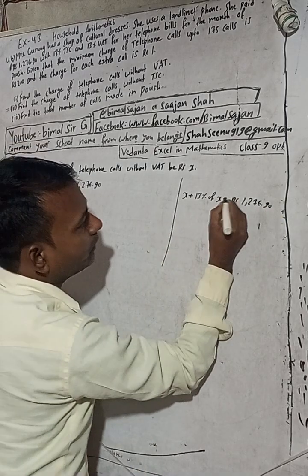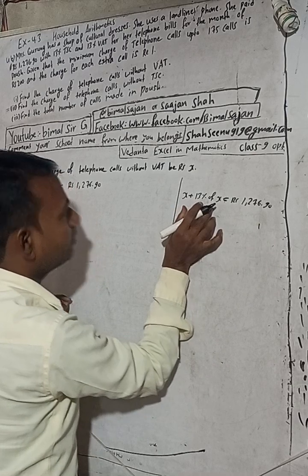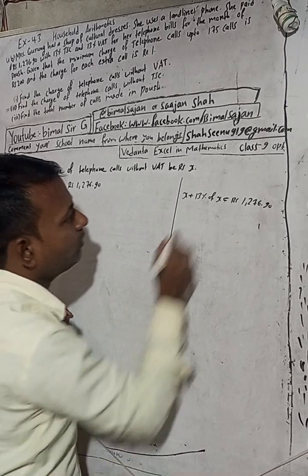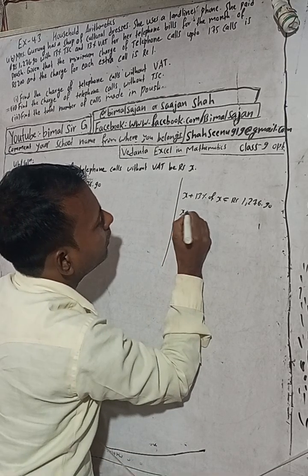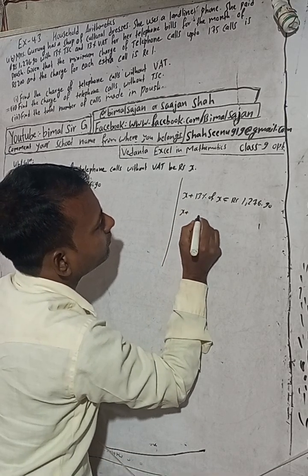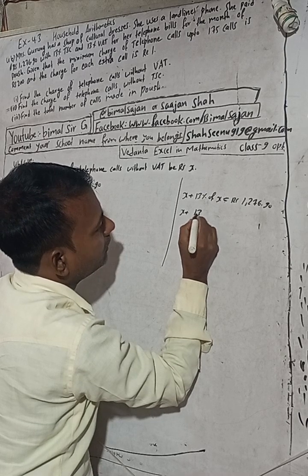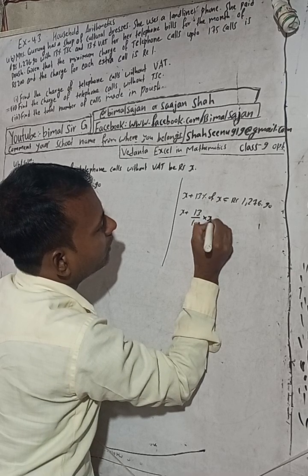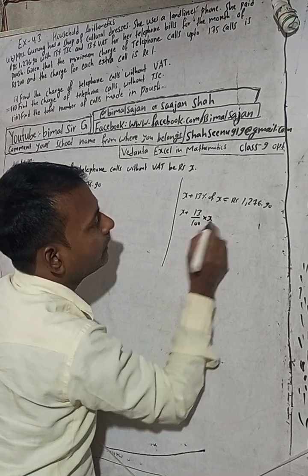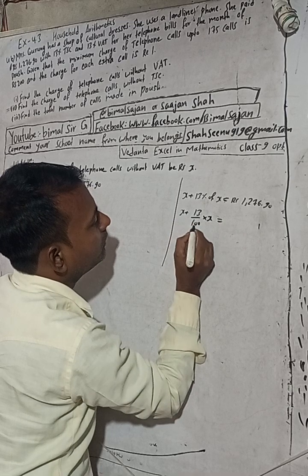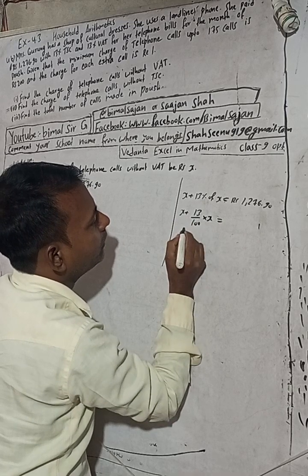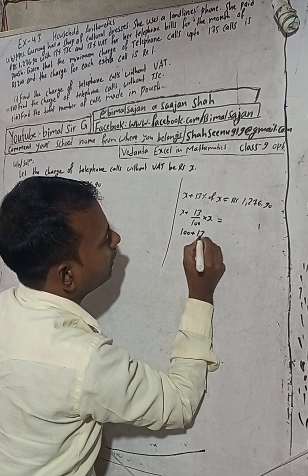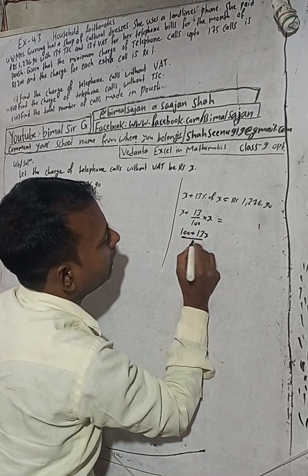When you solve this, x plus 13% means 13% equals 13 by 100 into x. So this becomes 100x plus 13x divided by 100, which is 113x by 100. This means 113% of x — that is why we can directly write 113% of x equals Rs 1,276.90.